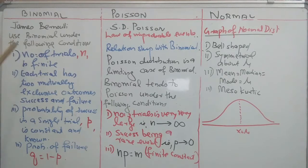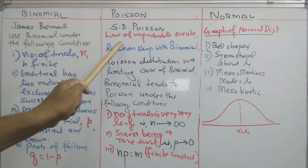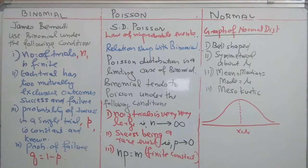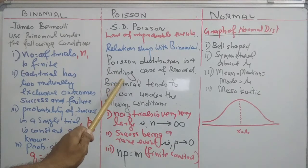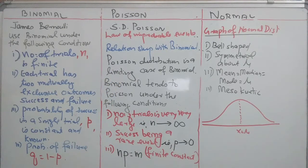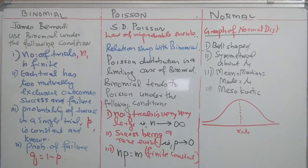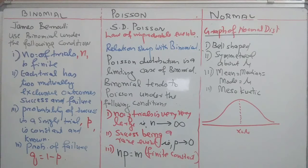Poisson distribution, known as the law of improbable events, is an extension of binomial distribution — Poisson is the limiting case of binomial. Conditions for Poisson: (5) The number of trials is very large — n tends to infinity. (6) Success is a rare event, so the probability of success in a single trial is negligibly small — p tends to 0. (7) The product np equals m, a finite constant.